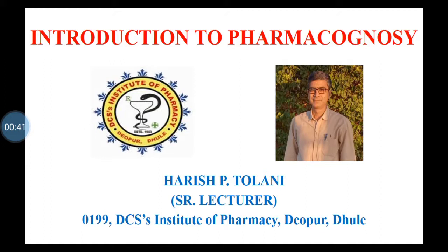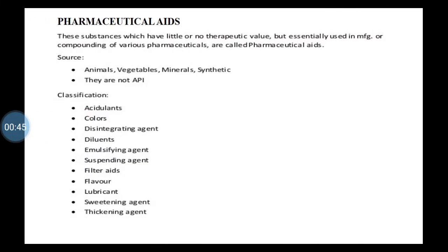Beeswax is from pharmaceutical aids, so our first category is pharmaceutical aids. The question is asked on definition and classification, so you should know the definition and classification with some examples from each category. We are starting now with the study of crude drugs. In this second part of the chapter, we have 84 crude drugs which are obtained from natural sources. In pharmaceutical aids, there are total 14 drugs, and beeswax we have already covered.